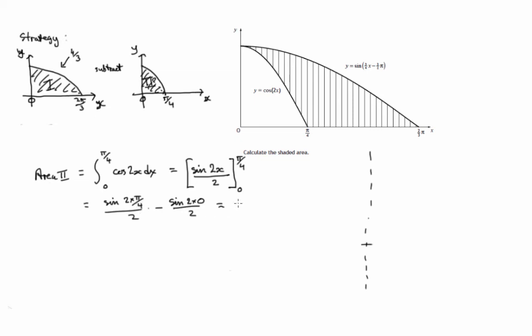A couple of π/4s would be π/2. So we've got sine of π/2 over 2 minus sine of 0 over 2. The sine of π/2, there it is there, is 1. So this is 1/2, and the sine of 0 is 0. So this is 1/2. It's 1/2 unit squared for area 2.